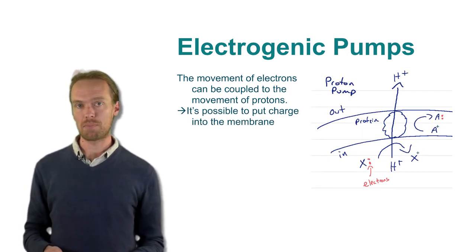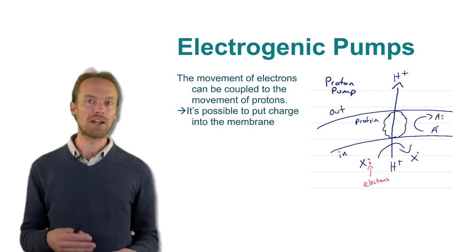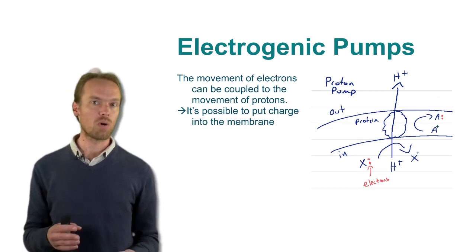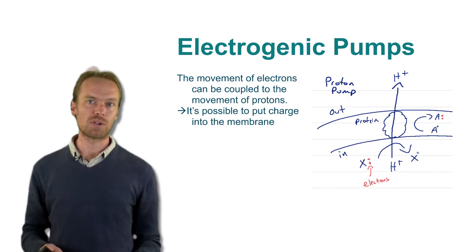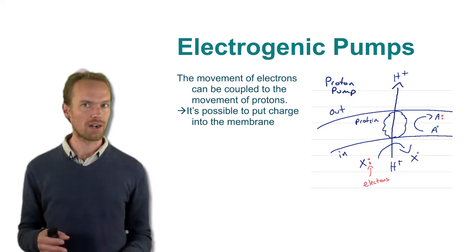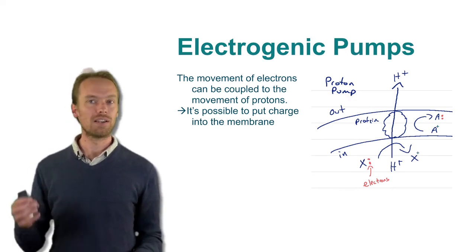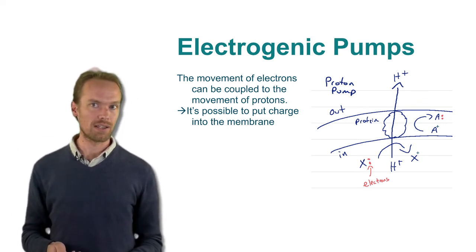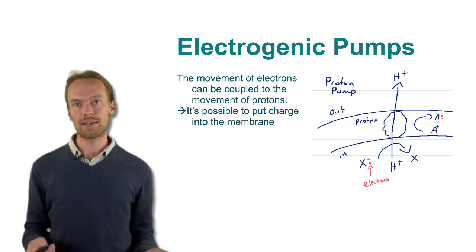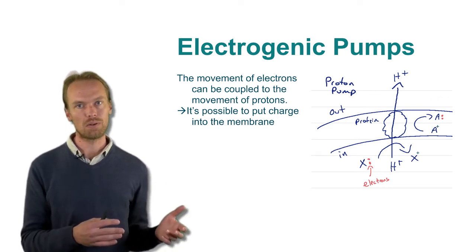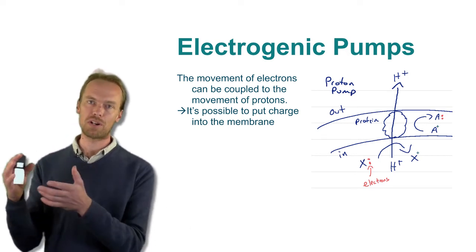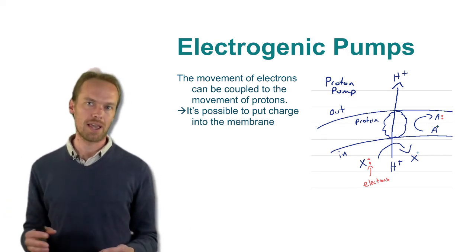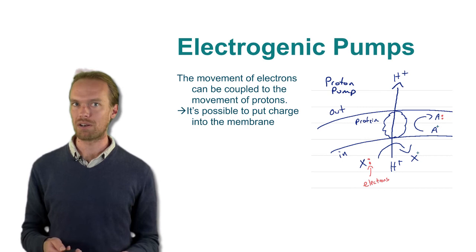Another class of electrogenic pumps will take electrons again. But this time the electrons will go into the membrane. And so the electron acceptor here, A, could be inside the cell, in the membrane, or outside of the cell. There's a wide variety of places that the electrons can go. The mechanism here would be the same. Taking the energy that's available when electrons move from a donor to an acceptor and coupling the energy released to the movement of a proton across the membrane.